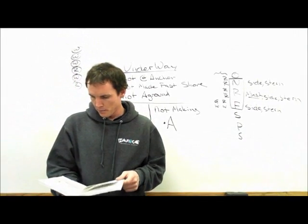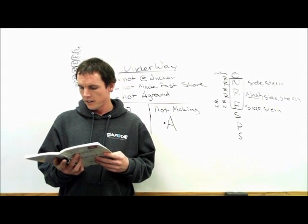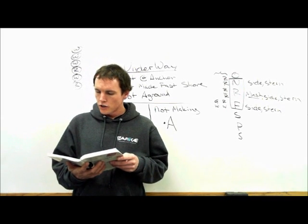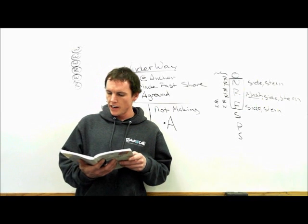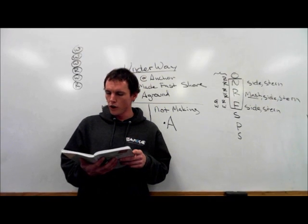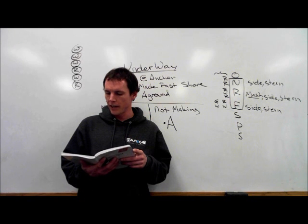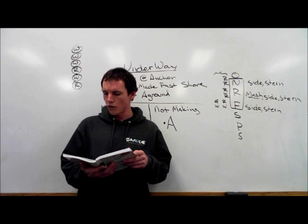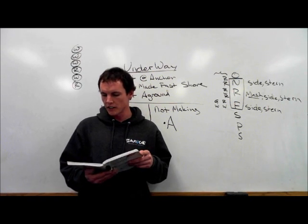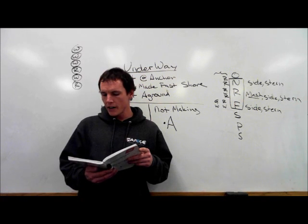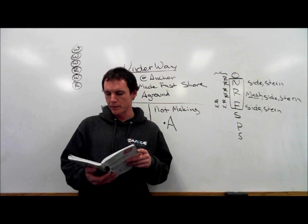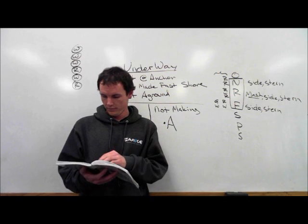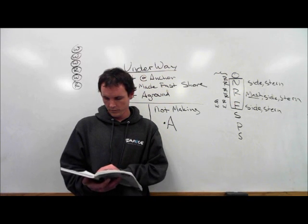So these fishing vessels, page 85, Rule 26 continued. A vessel engaged in fishing other than trawling shall exhibit two all-round lights in a vertical line, the upper being red and the lower white, or a shape consisting of two cones with their apexes together in a vertical line one above the other. When there's outlying gear extending more than 150 meters horizontally from the vessel, an all-round white light or a cone apex upwards in the direction of the gear. And when making way through the water, in addition to the lights prescribed in this paragraph, side lights and a stern light. That's where this comes in.